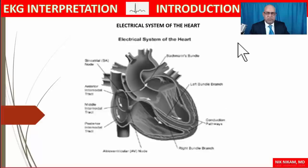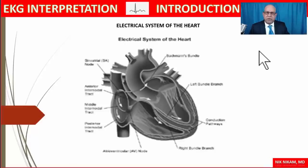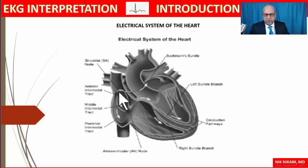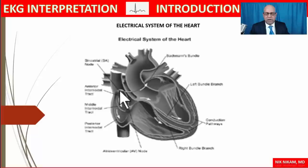It begins with the electrical system of the heart. The heart beats around 60 to 80 times per minute, controlled by a well-crafted electrical system. There are specialized myoepithelial cells at the junction of the right atrium and the superior vena cava called the sinus node. The sinus node is the impulse generator — it automatically generates impulses 60 to 80 times per minute, transmitting through inter-atrial connections to the AV node, located at the junction of all four chambers.